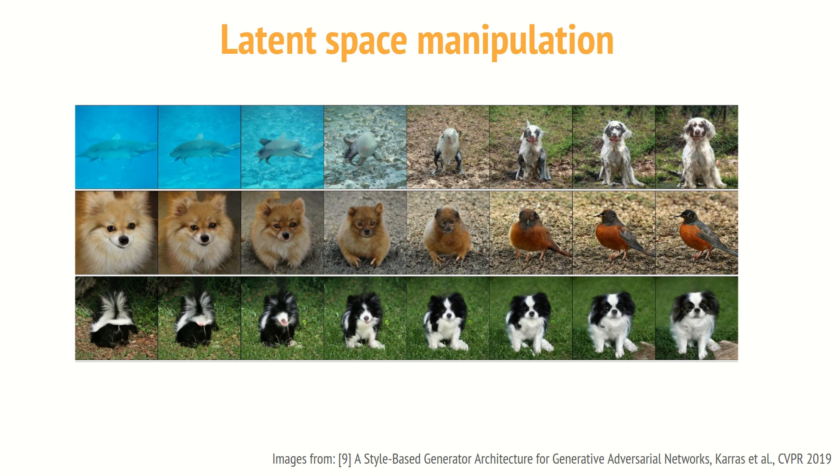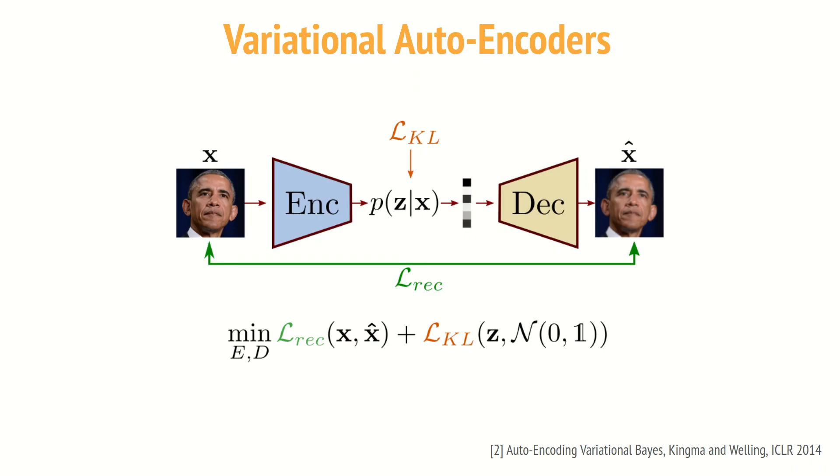we can perform interpolation in the latent space and generate the corresponding images for every intermediate latent vector. We observe that the network outputs smooth transitions, where the key features of the object, such as pose, size, background or class, are progressively changed when we perform interpolation. So that's it with GANs. It was a quite quick overview. But now I'm going to present VAEs, that is one of the popular alternatives to GANs.